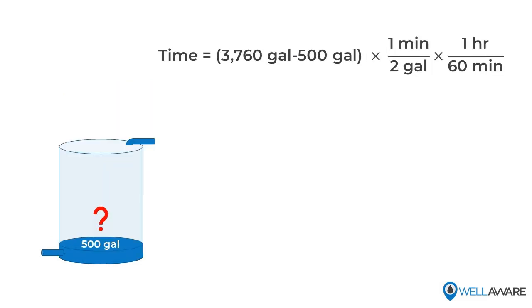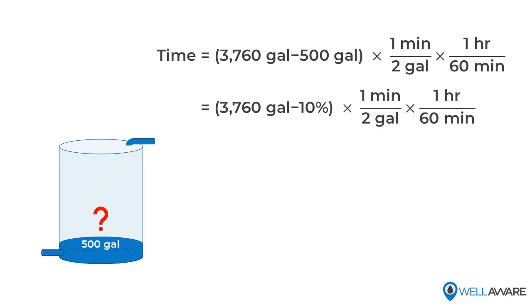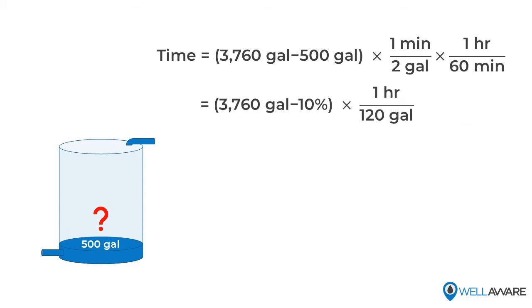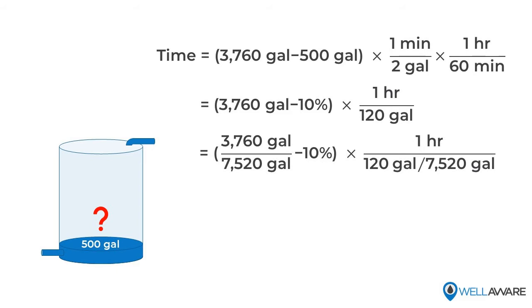First thing, we'll replace that 500 gallon target with a 10% target. Then to make the math a little easier, I'm going to go ahead and convert our flow rate out of 2 gallons per minute to 120 gallons per hour. Then I take every number in that equation and I divide it by 7,520 gallons to get those numbers as a percentage of the tank capacity.